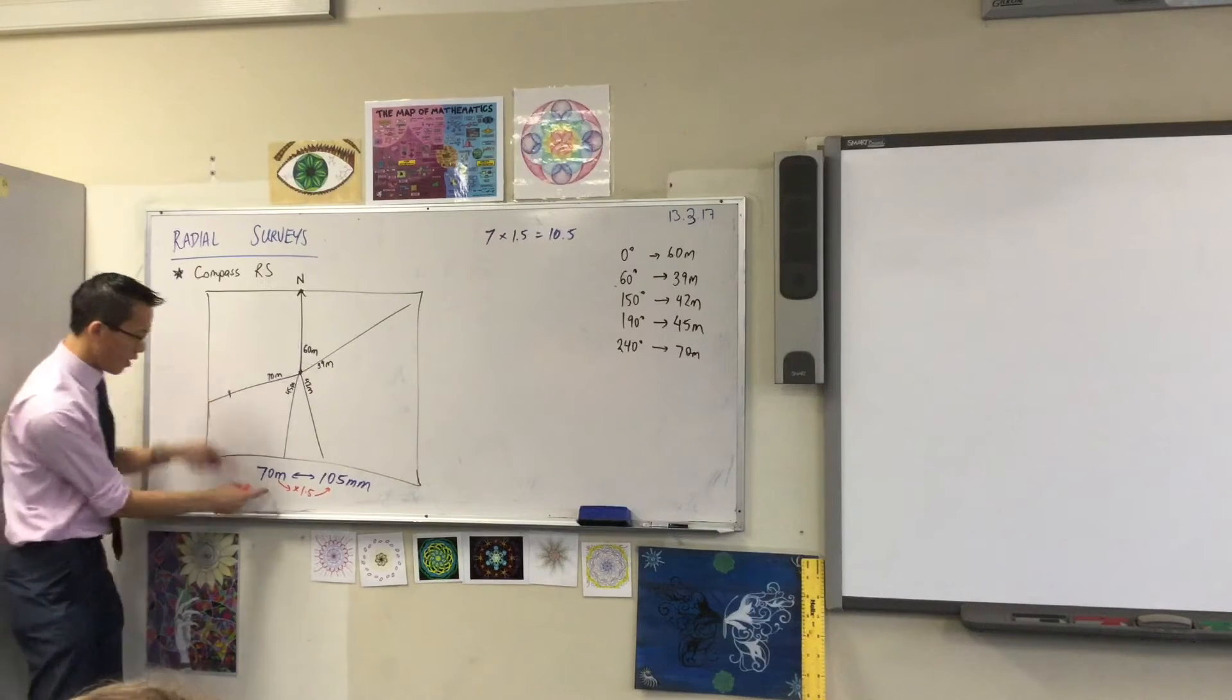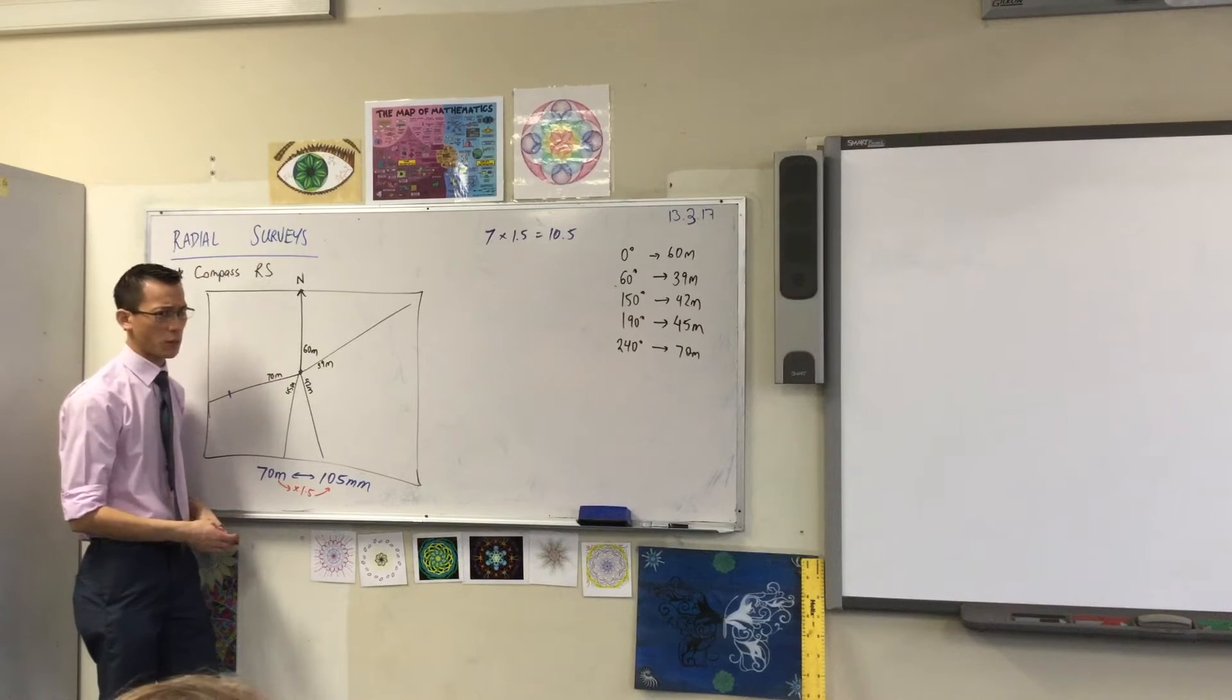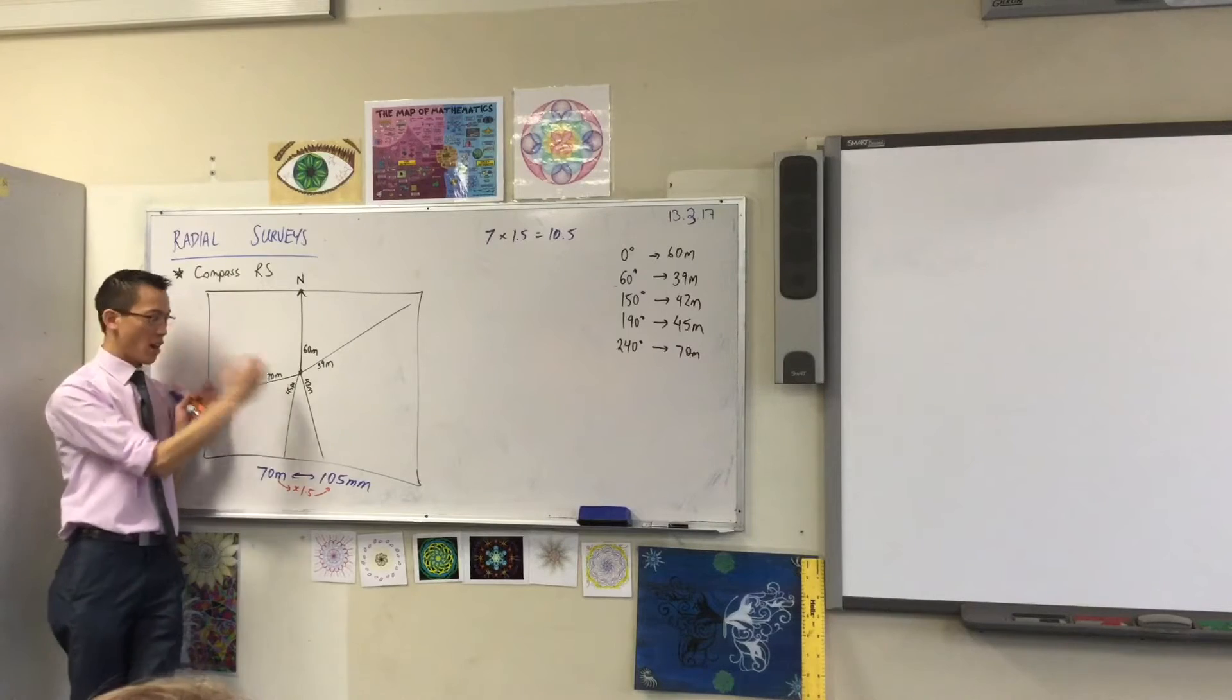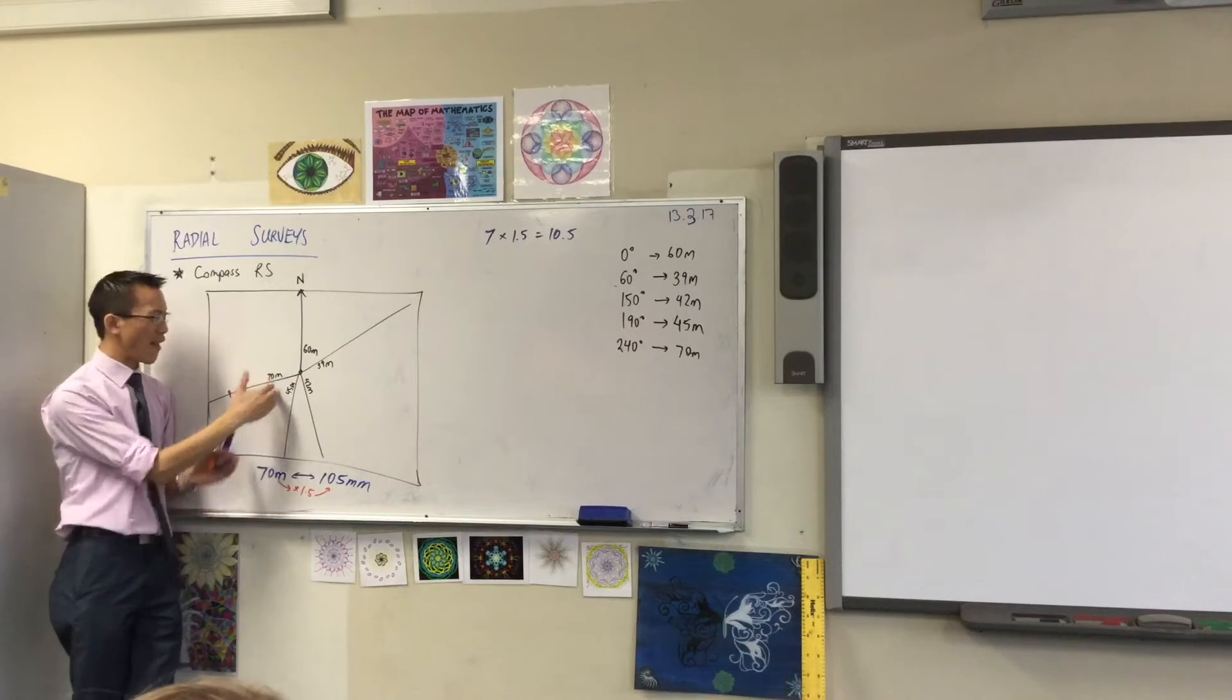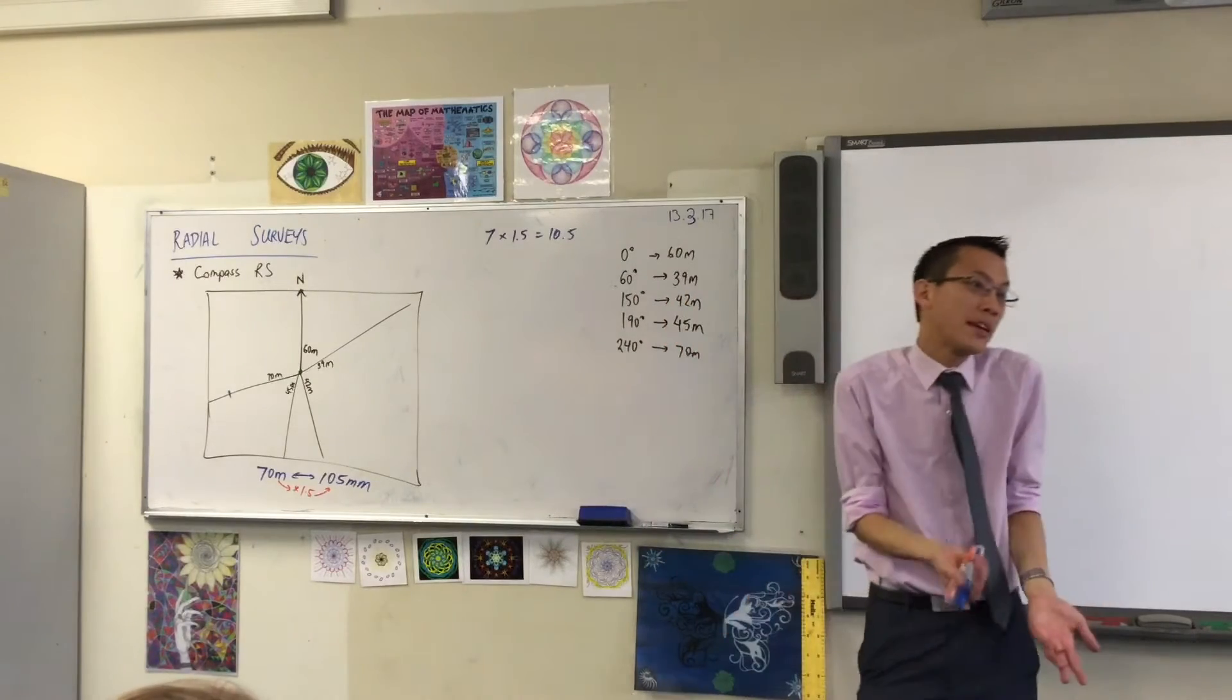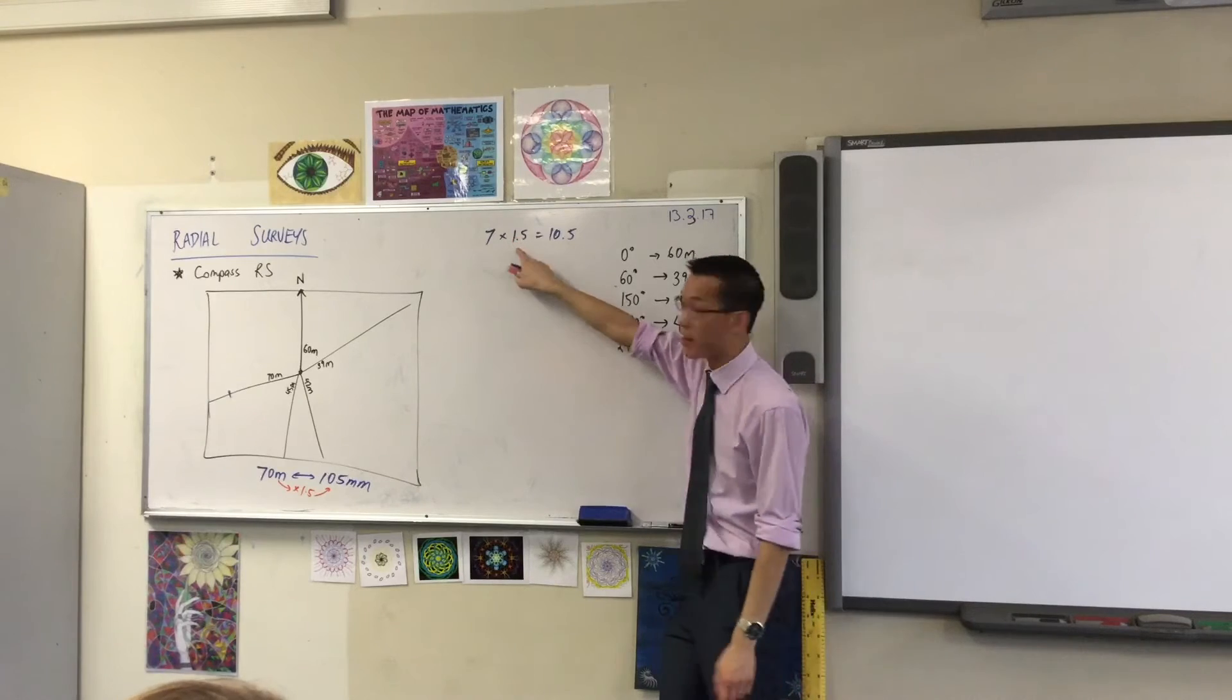This is a 10.5 centimeter line on my page. Then I'm going to go from 60 meters, multiply by 1.5 and that will give me a new length. On mine, that should be 60 times 1.5. What's 60 times 1.5? That's 90. So I'm going to measure a 90 millimeter line. All I did was I looked at my longest length and I want to fit onto the page, so I pick a length here that gives me a nice, neat number.